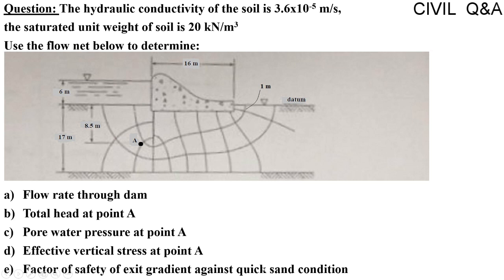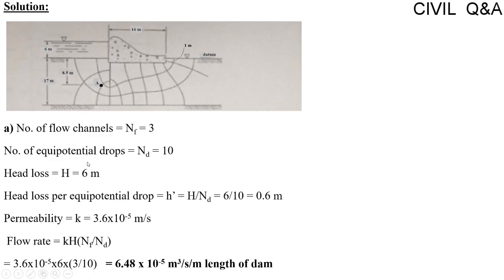First, we determine from the flow net the number of flow channels and number of equipotential drops. We can see that there are three flow channels in the flow net — one, two, and three. And there are ten equipotential drops in the flow net — one, two, three, four, five, six, seven, eight, nine, and ten.